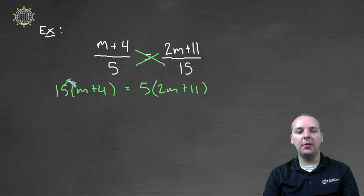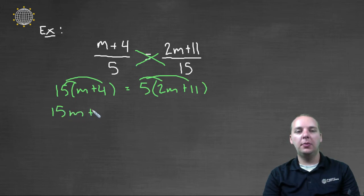We'll simplify both sides, we'll distribute these numbers here. So we'll have fifteen m plus sixty, that's fifteen times four, equals ten m plus fifty-five.